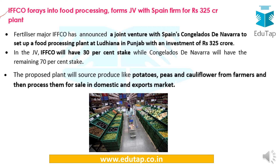The next news is about IFFCO. IFFCO has now entered food processing as well. IFFCO, already a fertilizer giant that launched its e-portal, has formed a joint venture with a Spanish firm to establish a food processing plant at Ludhiana in Punjab. IFFCO will hold a 30% stake. Initially, products like potatoes, peas, and cauliflower will be processed, and later expanded — first for domestic markets, then exports. This is significant as IFFCO is considered the largest multi-state cooperative society.